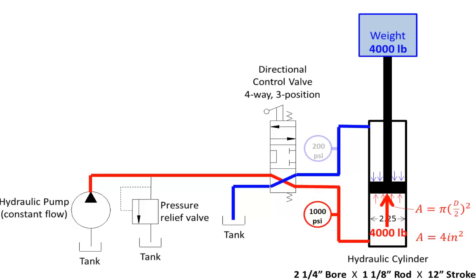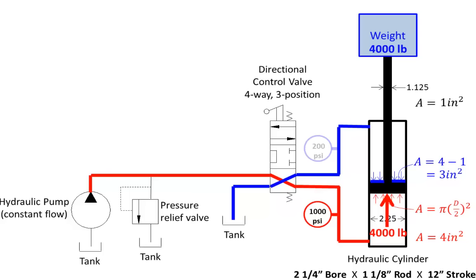Using pi d squared over four with a rod diameter of 1.125 inches, the cross-sectional area of that rod is one square inch. So the area on the top of the piston would be the four square inches of the full piston minus the one square inch of the rod, giving a three square inch area. The 200 pounds per square inch acting on three square inches results in 600 pounds of downward force. So with 4,000 pounds pushing up and 600 pounds pushing down, we can only lift 3,400 pounds.